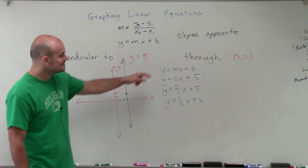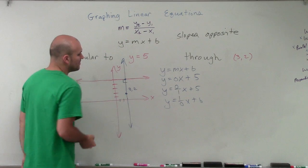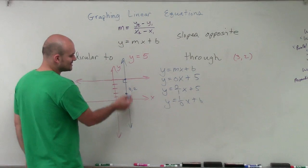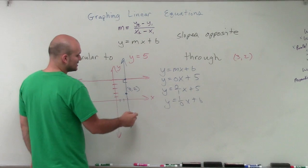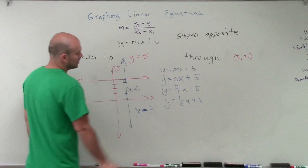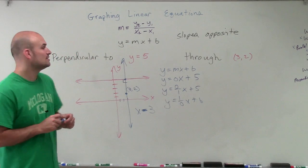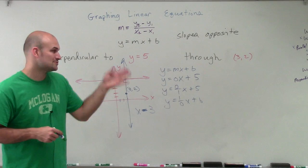Then also, since it goes to the point 3 comma 2, by setting the equation for this, I can see that this vertical line has an equation of x equals 3. So there you go, ladies and gentlemen. That is how you find a perpendicular line from a horizontal line that goes through a point. Thanks.